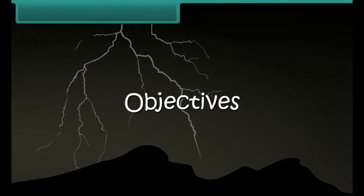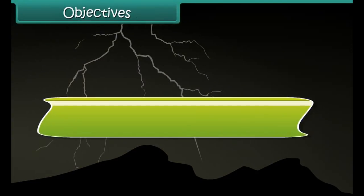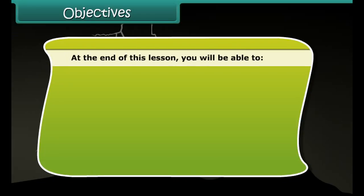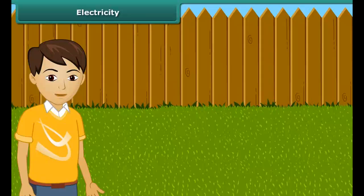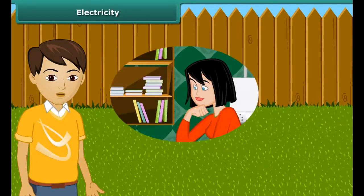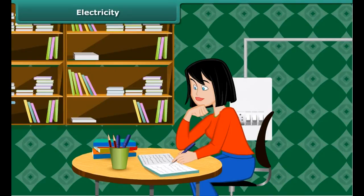Objectives: At the end of this lesson, you will be able to define electricity, establish the relation between electric current and charges, identify the two types of electricity, and define conductors and insulators.